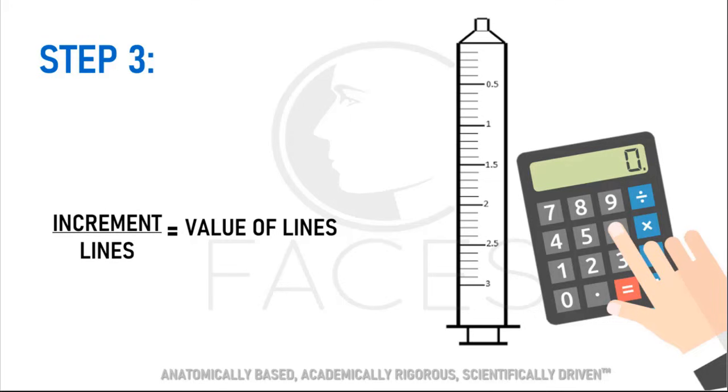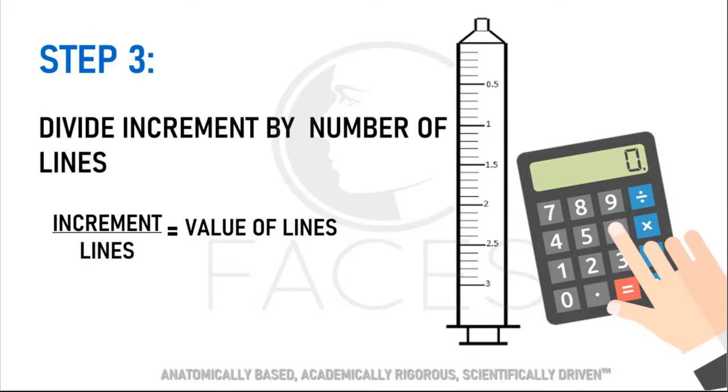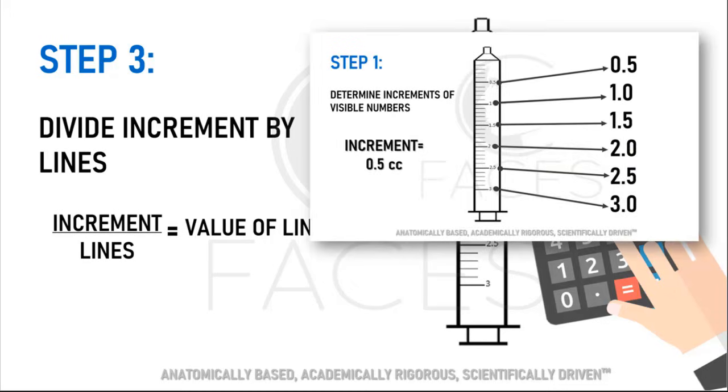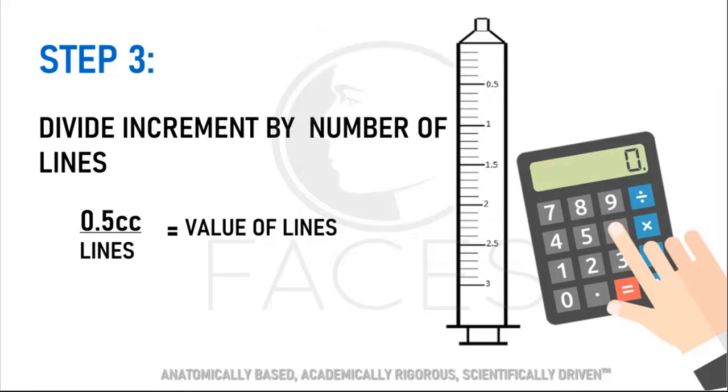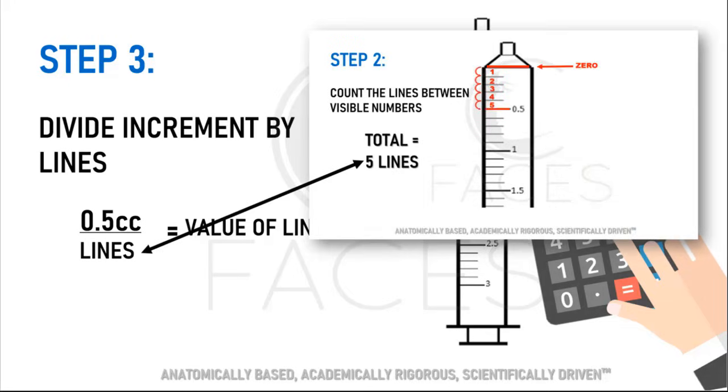Step three simply uses the values derived from steps one and two. Let me show you. In step one, we determined the numbered increments to be 0.5 cc's. We'll put that number as the numerator. Then in step two, we counted the lines between the numbers. That value is placed in the denominator.